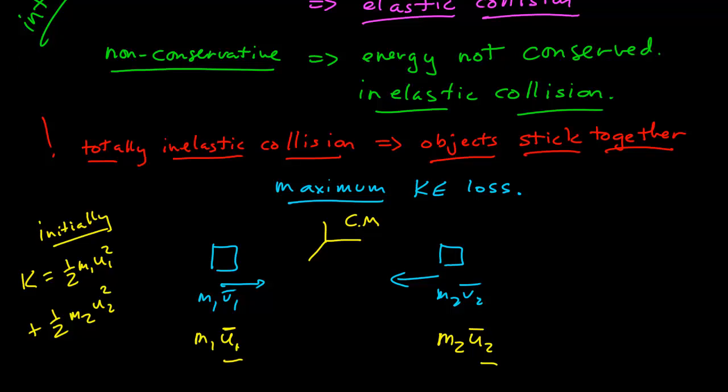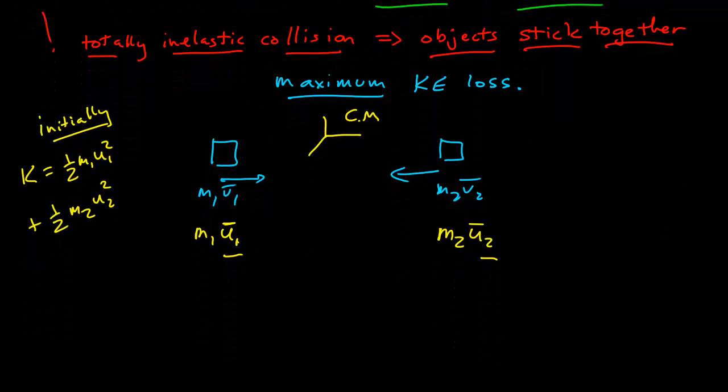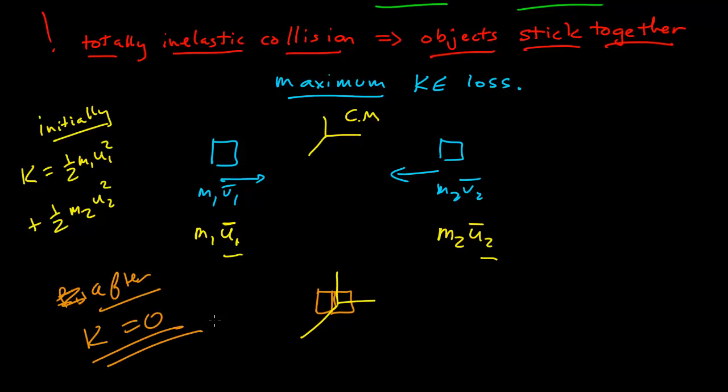But after the collision, what happens? Well, if we say after the collision, they're stuck together. Well, where's the center of mass frame? Well, the center of mass frame is right there. The center of mass has to be with the combined object, which is now essentially one object. The center of mass is now at the center of mass of one object. Well, the center of mass is not moving in the center of mass frame. So if the objects are stuck together at the origin of the center of mass, then the objects are not moving in the center of mass frame once they're stuck together.